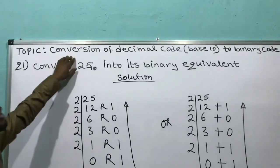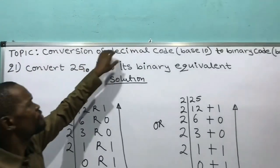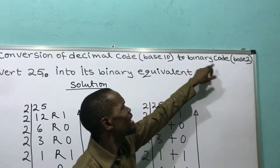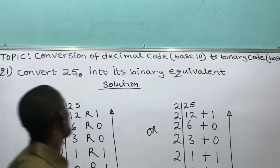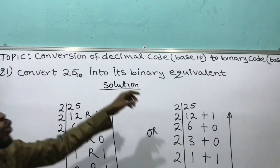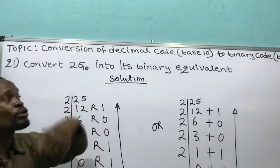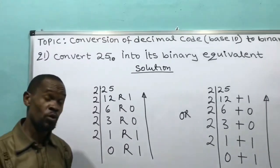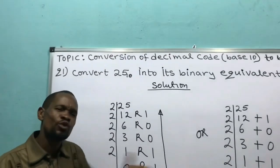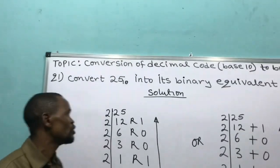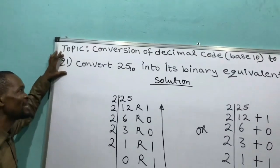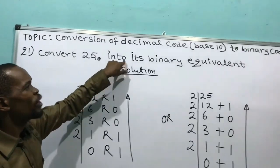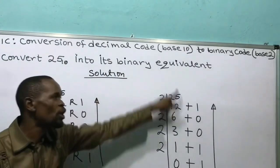The topic is conversion of decimal code, which is base 10, to binary code, which is base 2. We are taking from base 10 to base 2. Question number 1 says: convert 25 base 10 into its binary equivalent.